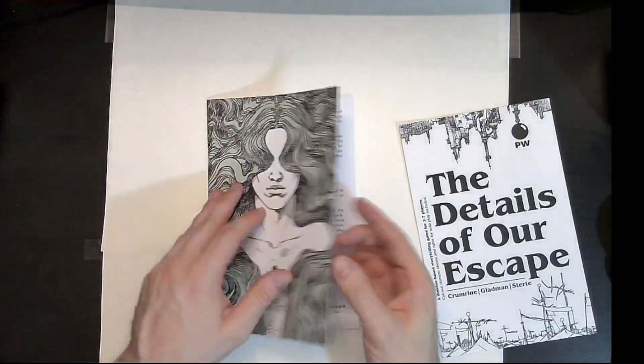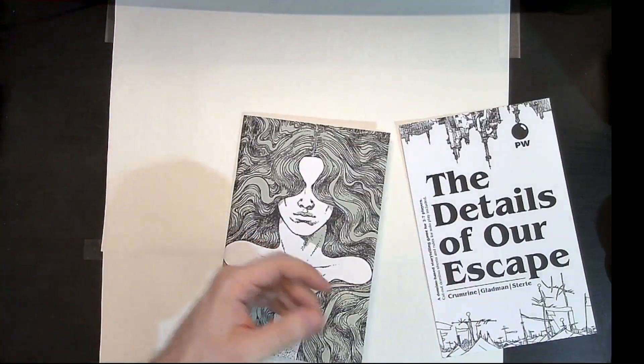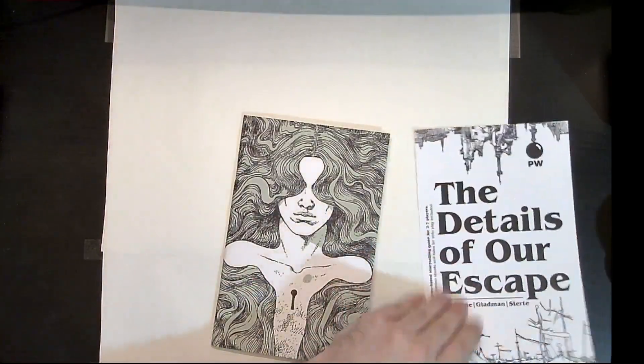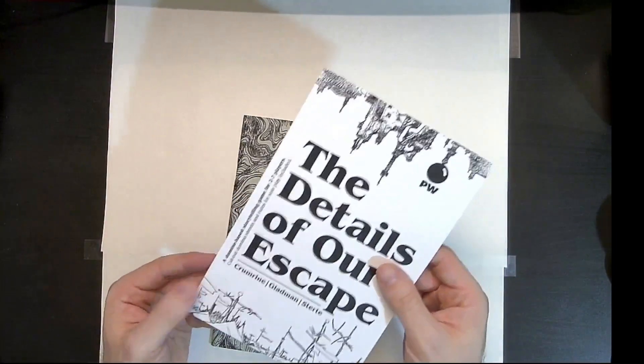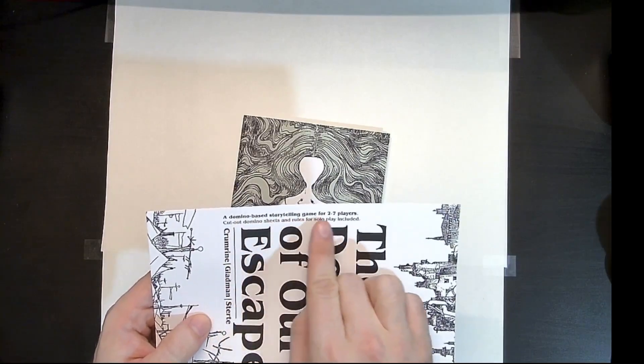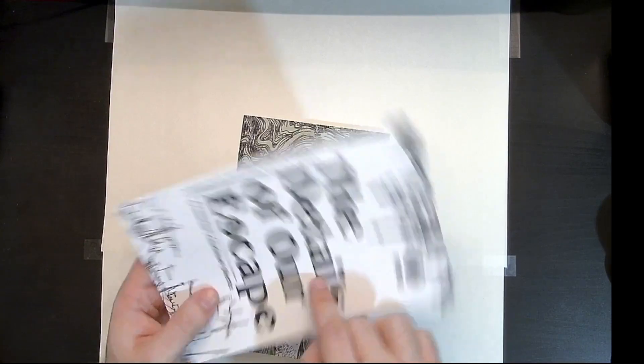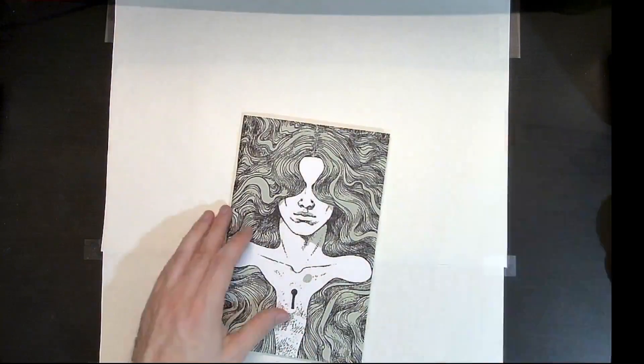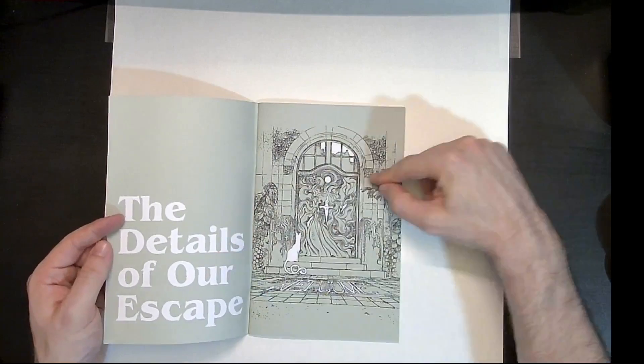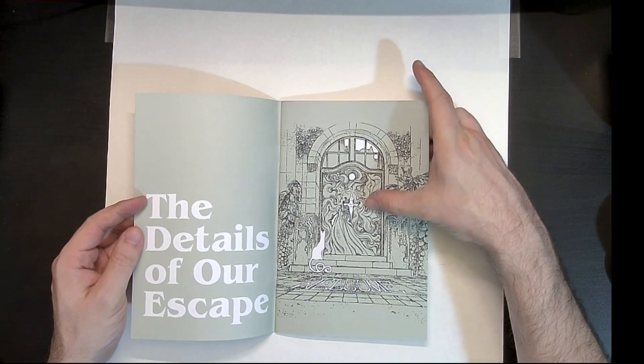So let's go ahead and open up the manual. Again, our cover is made out of this very similar sort of card stock. It's maybe a slightly lighter card stock than the actual dominoes themselves, as is this sort of title sheet, which again describes a bit about it. You know, it's a domino based storytelling game for two to seven cut out domino sheets and rules for solo player included. So you can play this by yourself. And then of course we have our title and our authors and stuff.